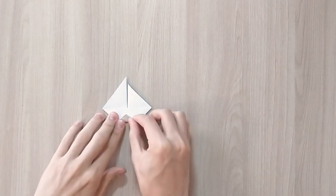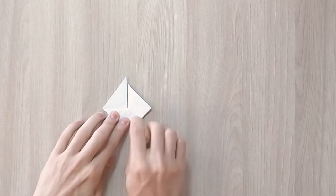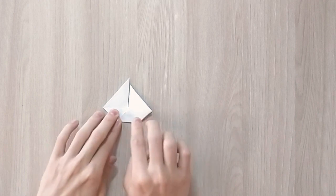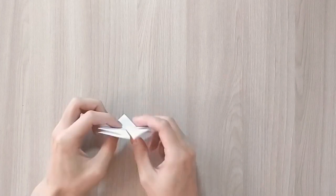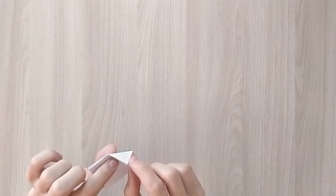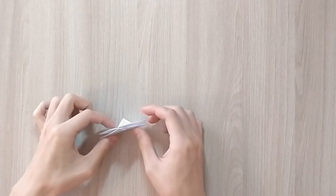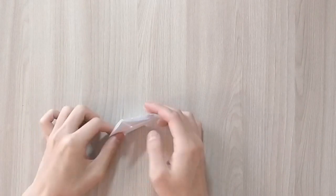Take the bottom corner and fold it right up to that edge. Like that. And now your sailboat is ready. You can place it using that triangle as a holder, and it should be standing.